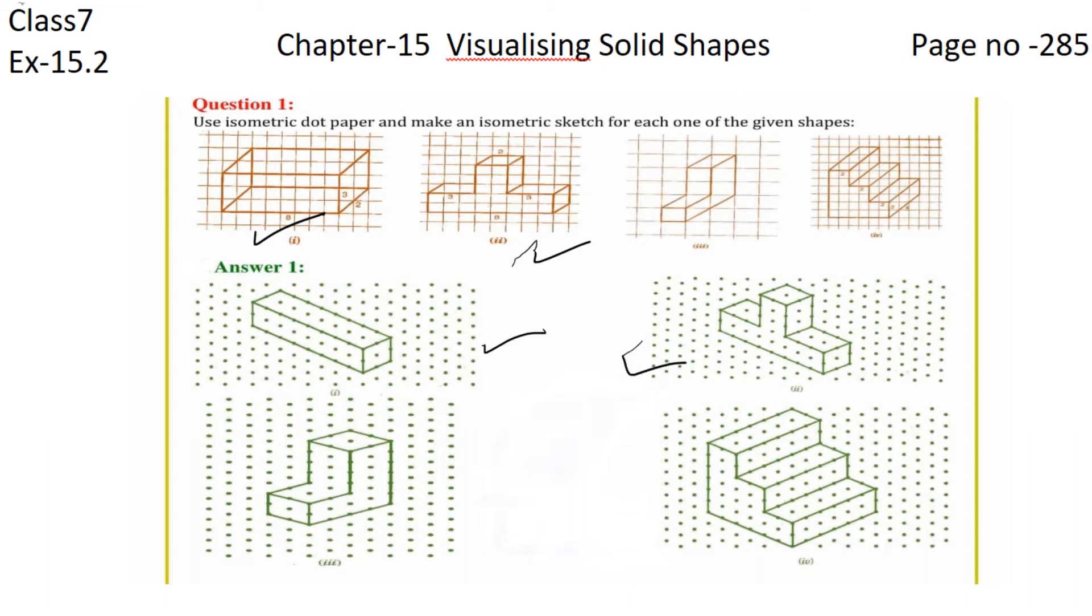And this is the isometric sketch of the second figure. Now comes the third one, this one is the third figure, and this one is the isometric sketch of this figure.